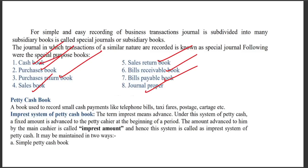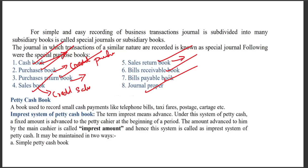In the cash book, all cash receipts and payments are recorded. In the purchase book, all credit purchases are recorded. In the purchase returns book, all purchase returns are recorded. In the sales book, all credit sales are recorded. Bills receivable and bills payable books record the respective bills.